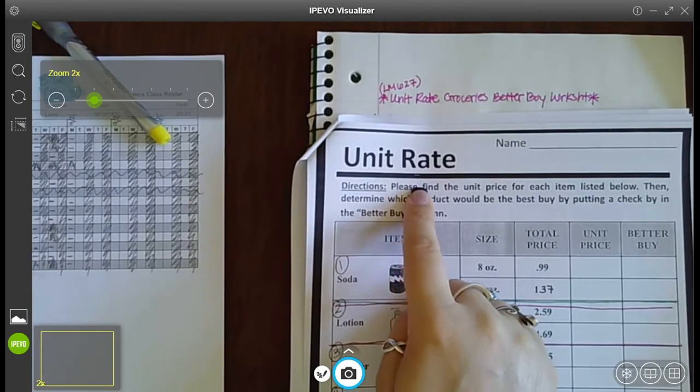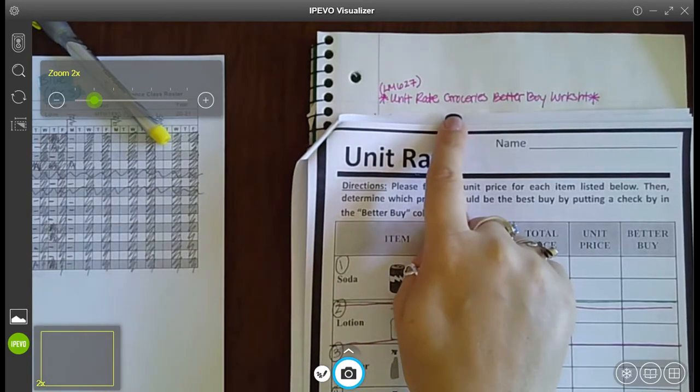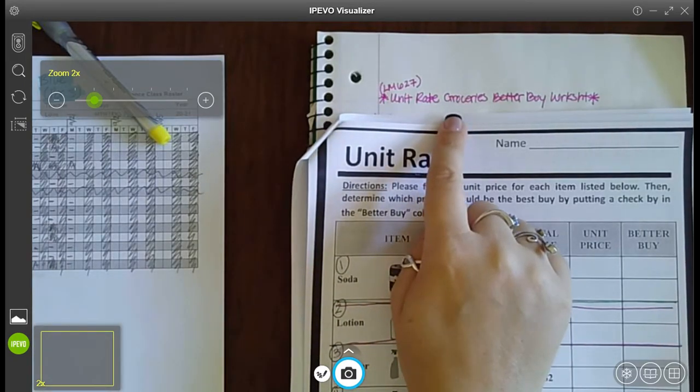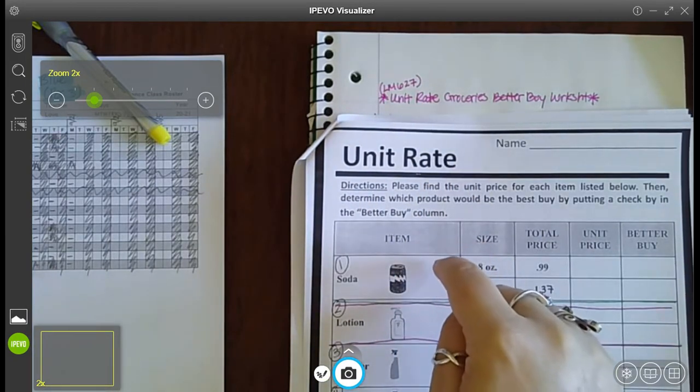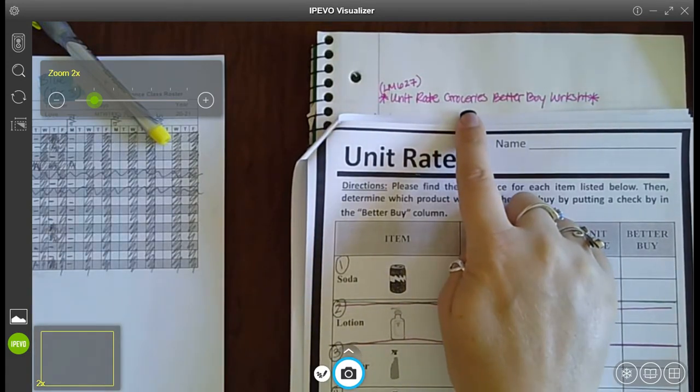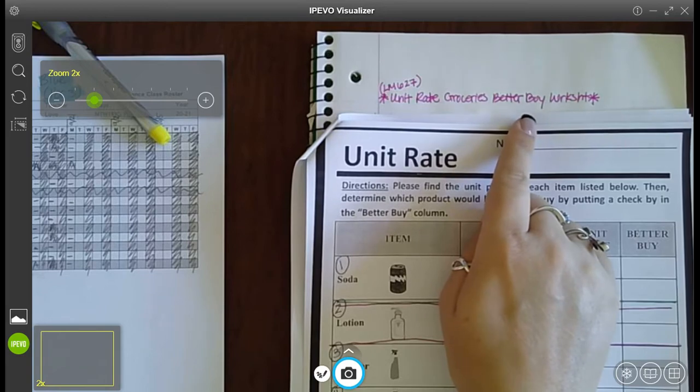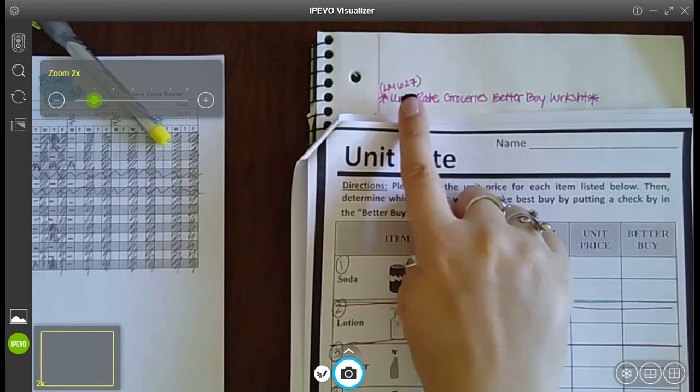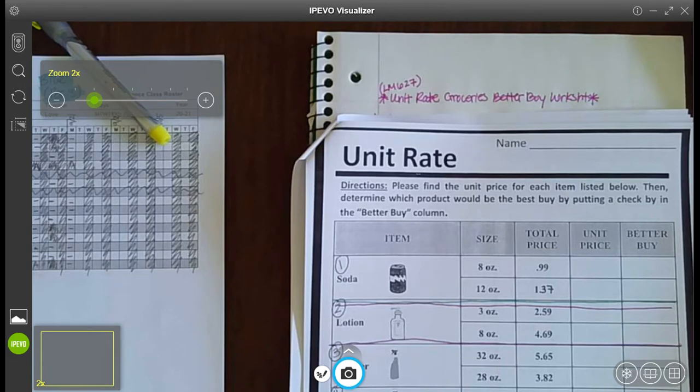Remember whenever you're showing your work, please show it on a separate sheet of paper and make sure that you title it whatever it is that you're working on. So this is the unit rate worksheet and since there's several titles like that you can be more specific. It's the groceries better buy worksheet or even just LM627. As long as you title what it is, we're okay.